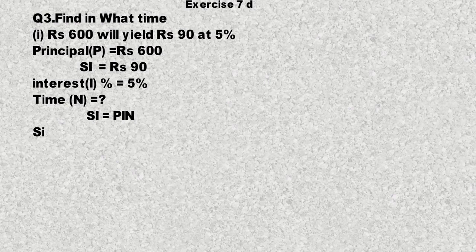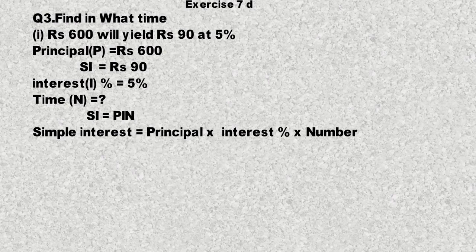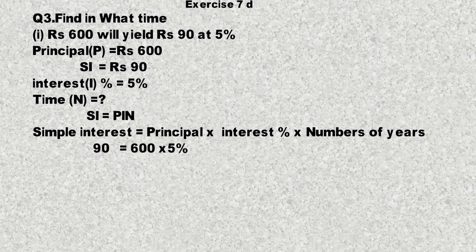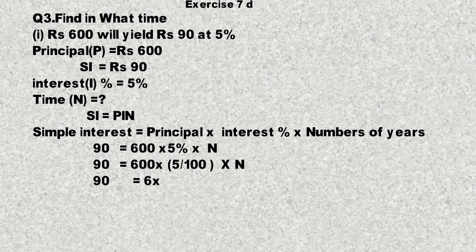SI = PIN کا فارمولا یہ ہے: Simple Interest = Principal × Interest Percentage × Number of Years۔ Simple interest کے نیچے 90 لکھیں گے، principal کے نیچے 600، interest percentage 5% یعنی 5/100۔ 20 اور 20 سے cut ہو کر 6 × 5n = 90 رہ جاتا ہے۔ 6 × 5 = 30، تو 30n = 90۔